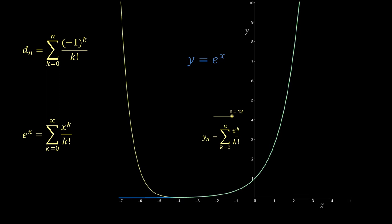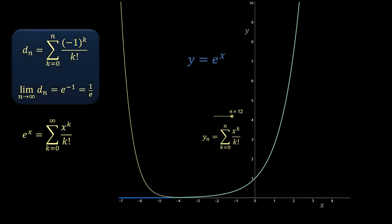Now back to the derangements result. The terms being summed here match those of the e^x series exactly if x is chosen to be minus 1. Therefore, for increasing n, d_n will approach e^(-1), or 1 over e. So this is the sought-after asymptotic value of the derangement probability.